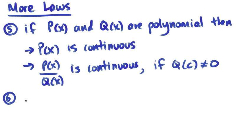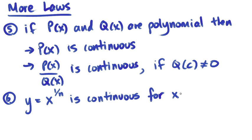The next one is if you have any function of the form y equals x to the power of 1 over n, that will also always be continuous, and it will be continuous for any x that is a natural number. And a natural number is a counting number: one, two, three.